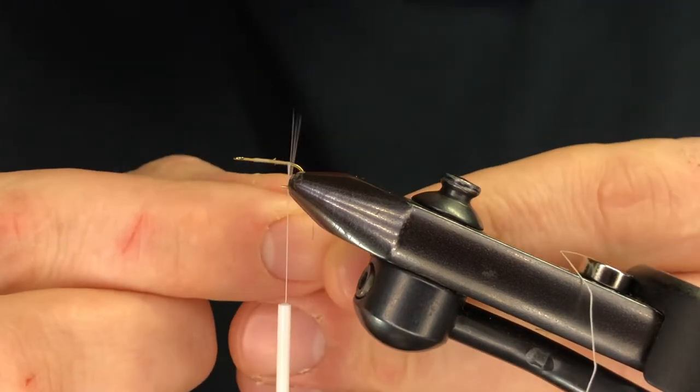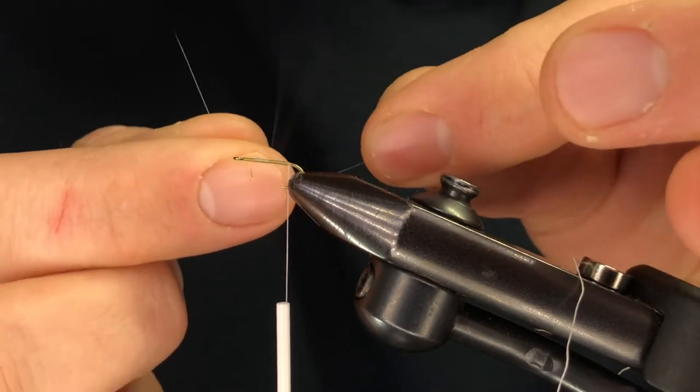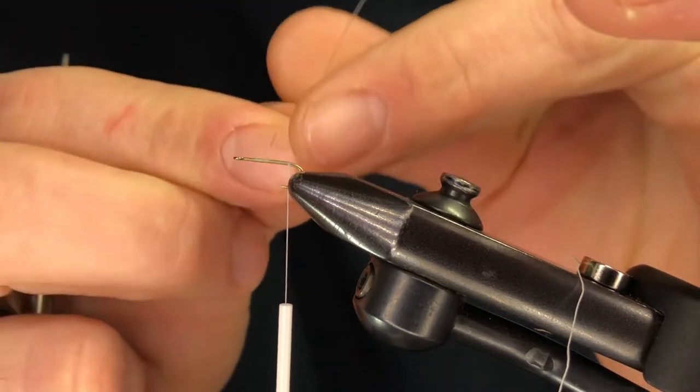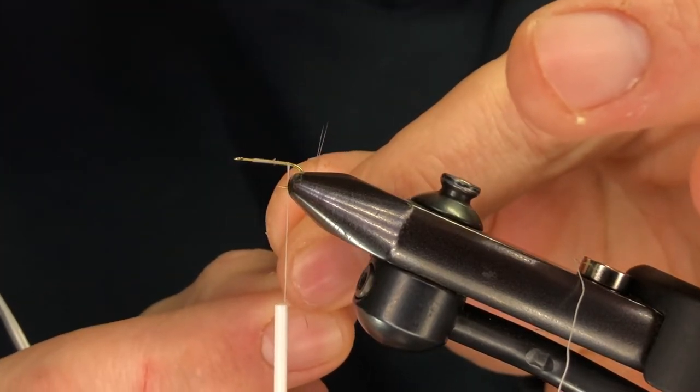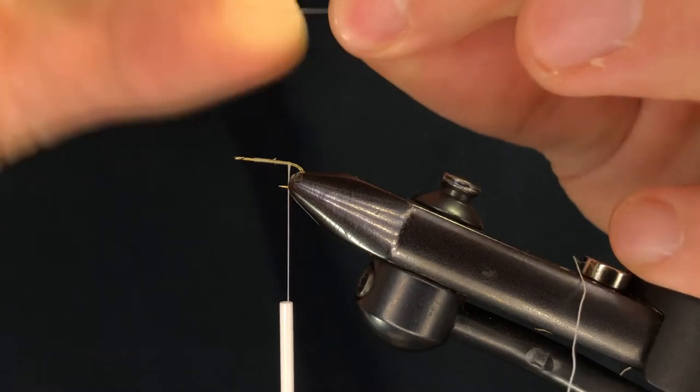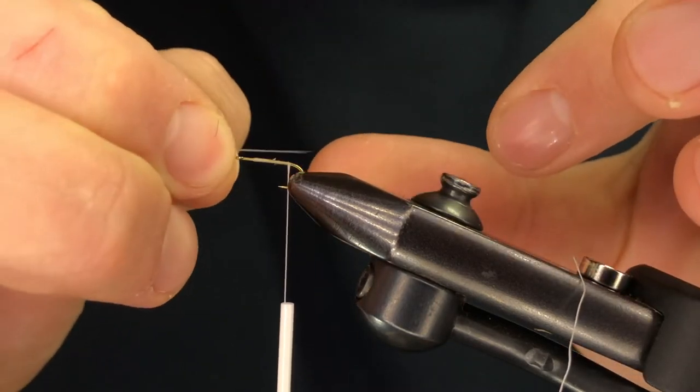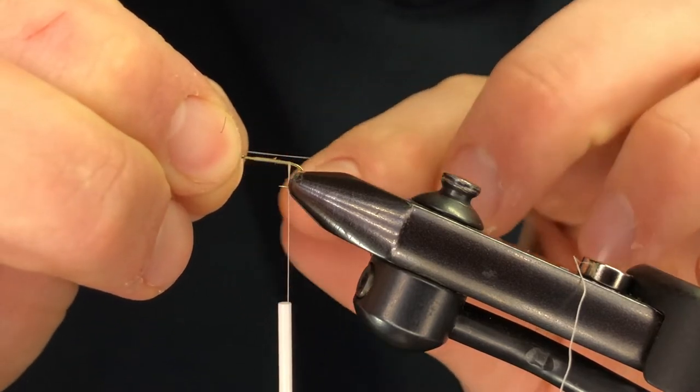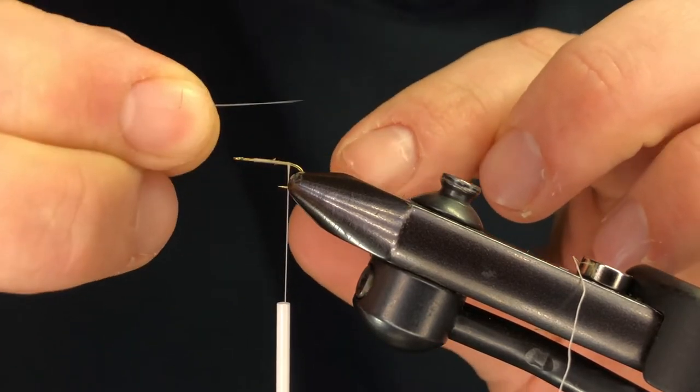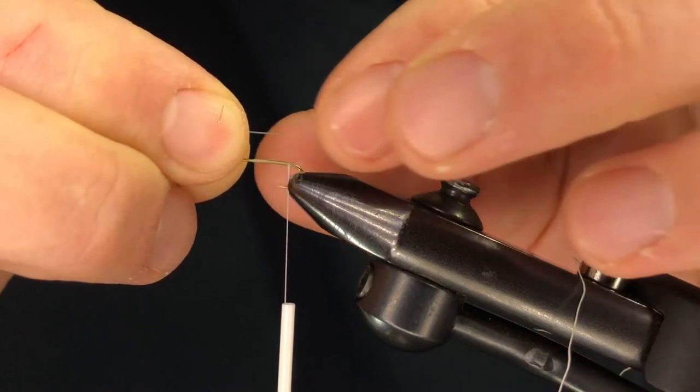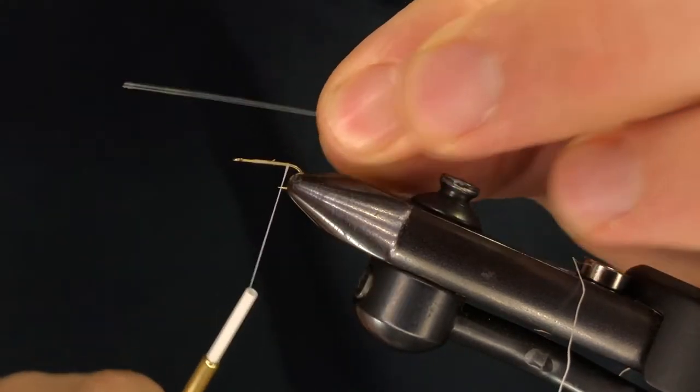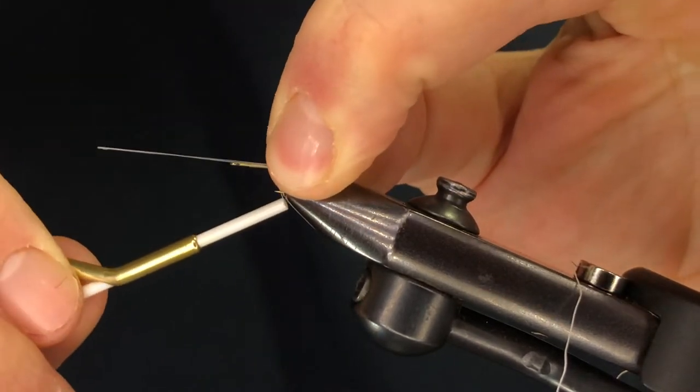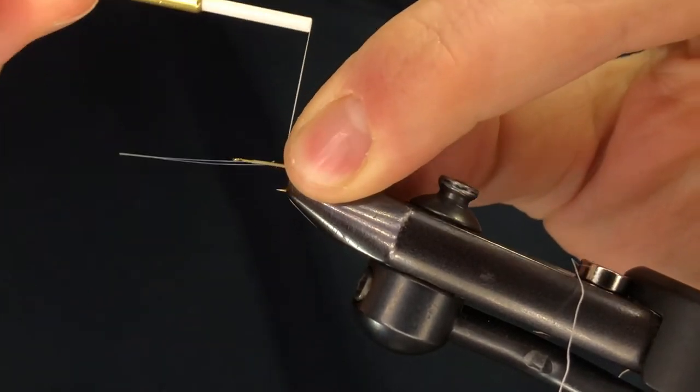So grab those fibots. You can see here I've grabbed more than I need. Try and separate out the two. Make sure the tips are at least close to aligned. And we're going to measure these to about a hook length or the shank length. And you can go even longer. A lot of our Michigan mayflies have really long tails. So don't worry about going too long. Transfer that measurement to your left hand. And we're going to do a little pinch wrap here. I like to do two.